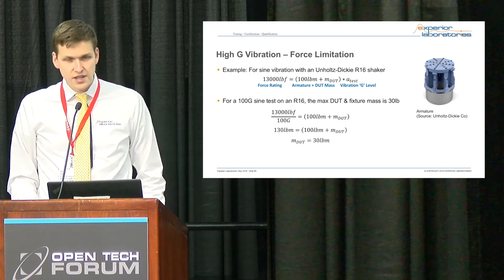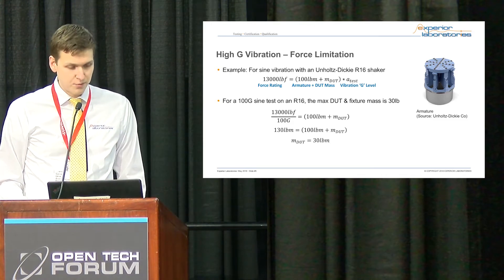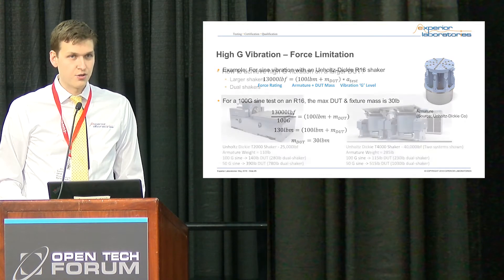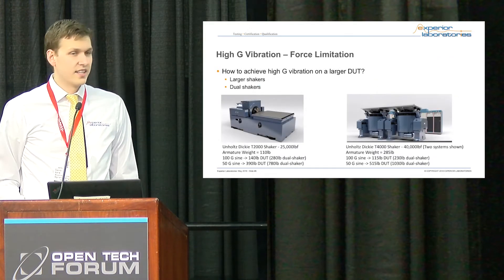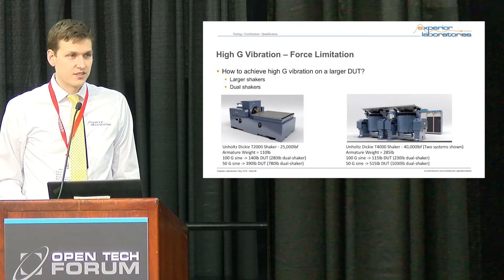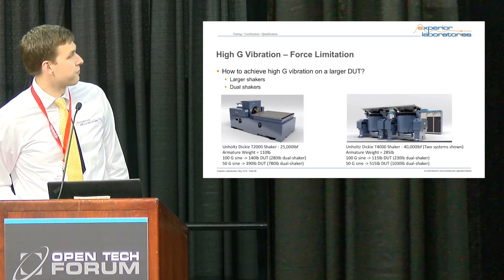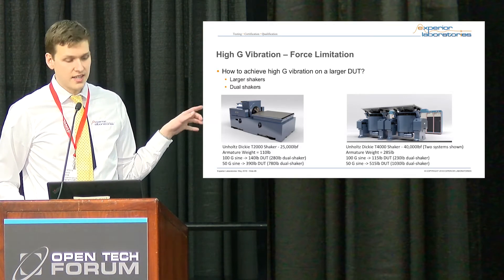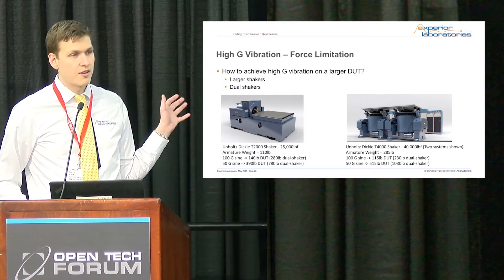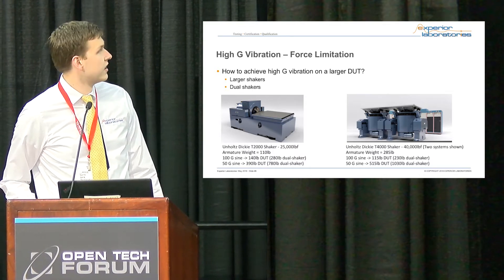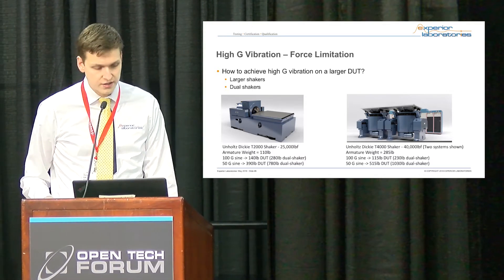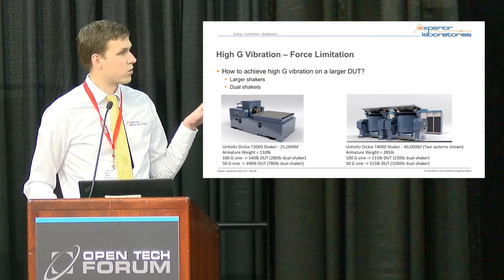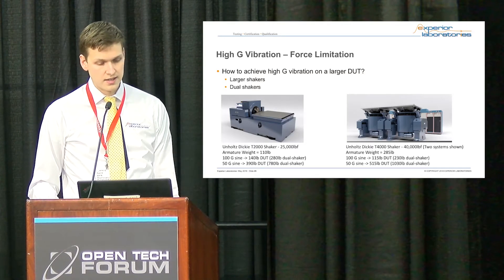The first obvious step is: if we need more pound force, go to a bigger shaker. For example, the T2000 shaker using that same 100 G sine test — you can have up to a 140-pound DUT. The T2000 is a 25,000 pound force shaker, so those are our workhorse shakers for high G tests. Our newer T4000 shakers are even higher, at 40,000 pound force.